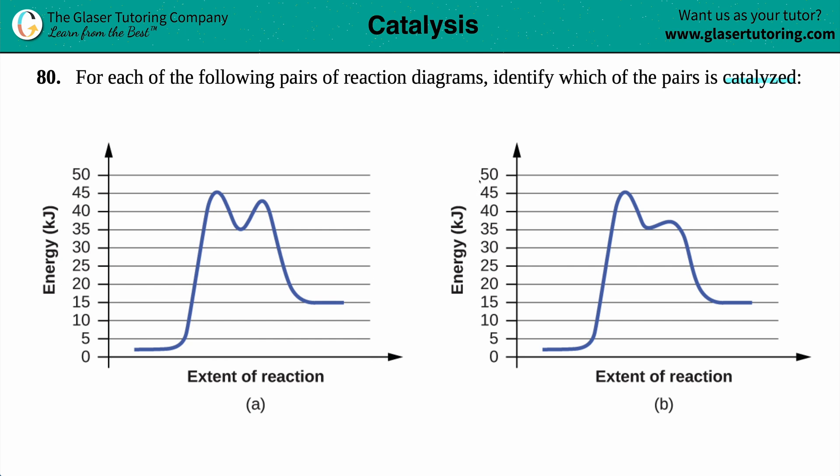Now we know that catalysts will always speed up a reaction by lowering the activation energy. But who has time to figure out the activation energy, especially if they just give us graphs? The easier method, when you're in a bind, if they give you graphs and you just need to know which one is catalyzed, the catalyzed reaction will always have the lower transition state.